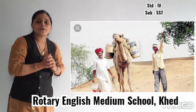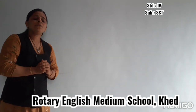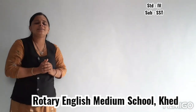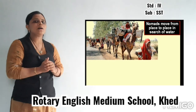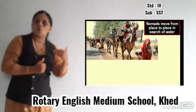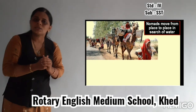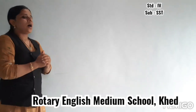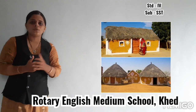Camel is also used to plow fields and to fetch water. It is a very important animal in the desert. The people in the desert lead a nomadic life — meaning the person shifts from one place to another. Such people are known as nomads or banjaras.